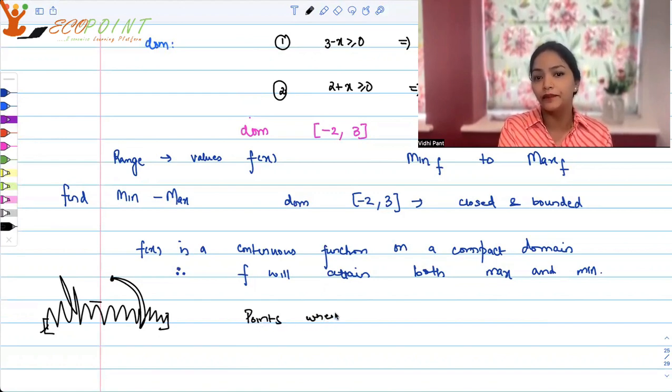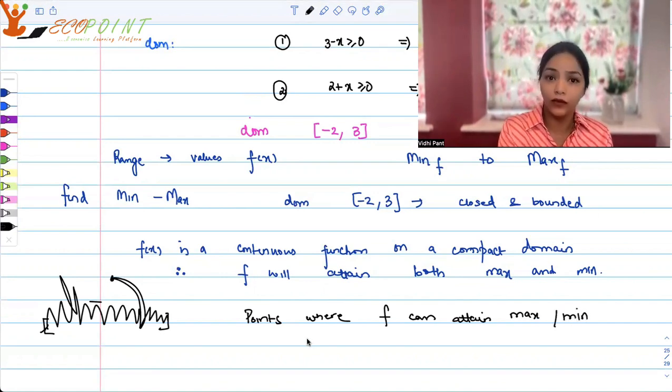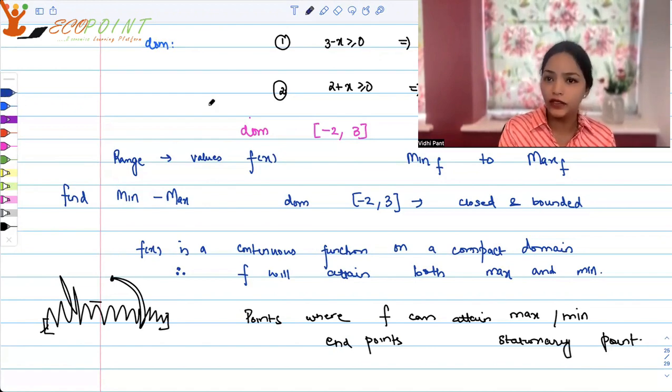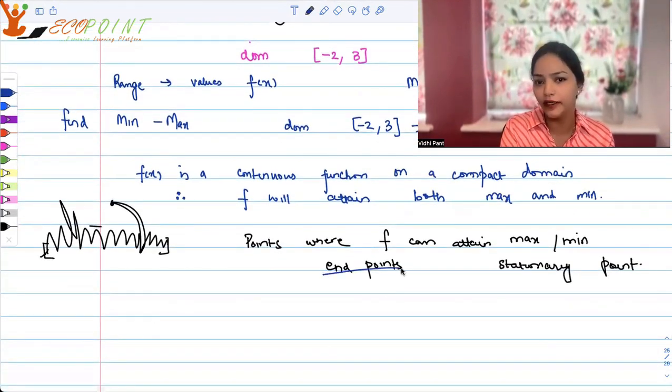Where can a max-min be attained? Points where f can attain maximum minima: any function can attain maximum minima at, in case of closed domain, endpoints. And another type of point where you can attain maximum is your critical point. Why do we call it critical? Because these are turning points. So the function is changing, some change is happening there. That change can give you maximum at that point. So, endpoints or else, in case of a differentiable function, we call our critical point stationary point.